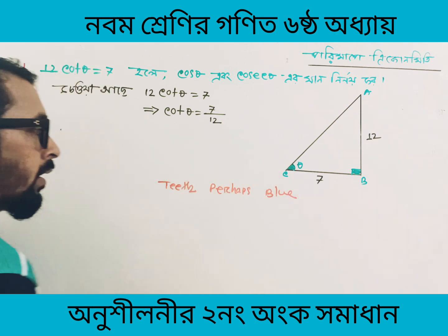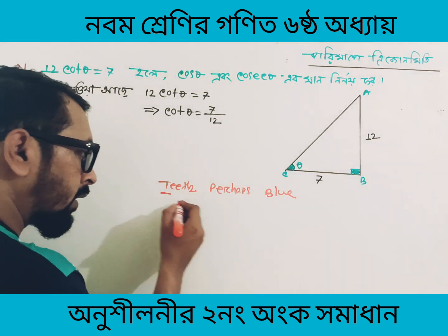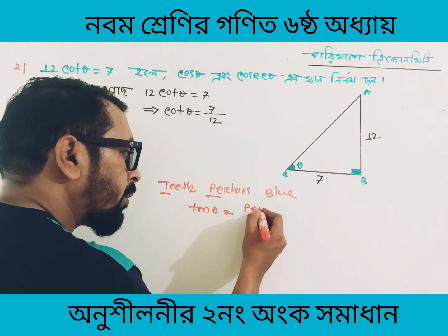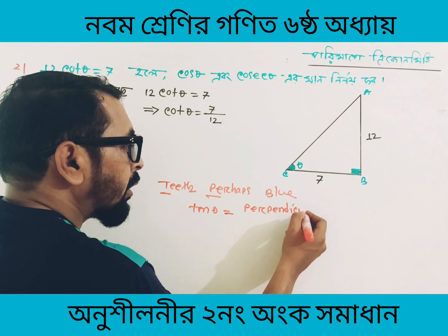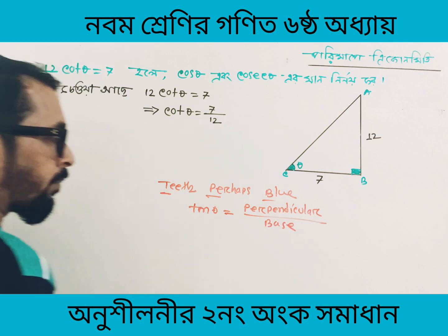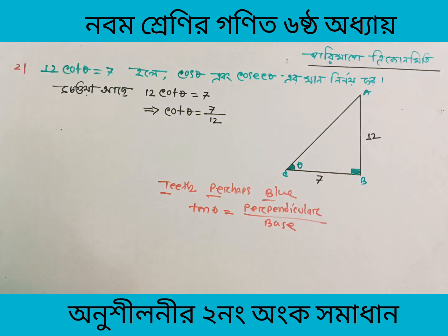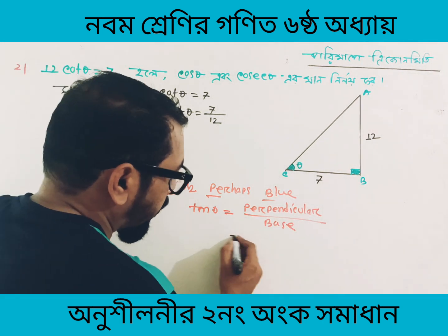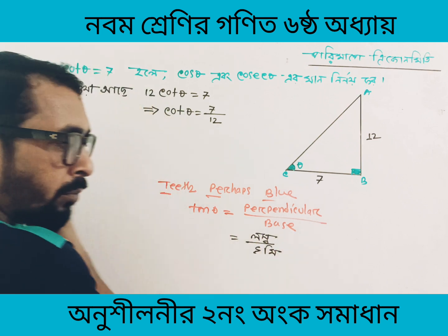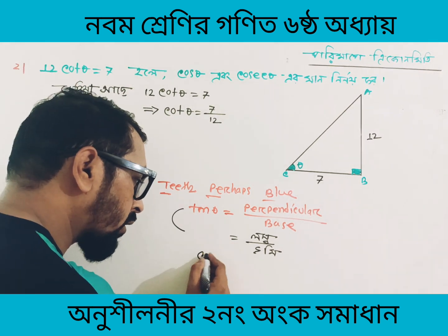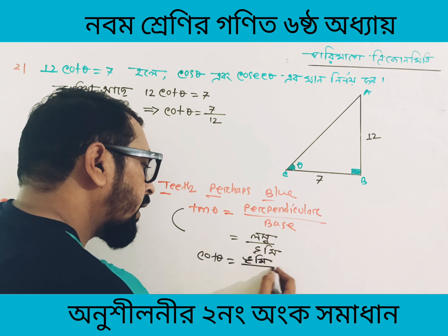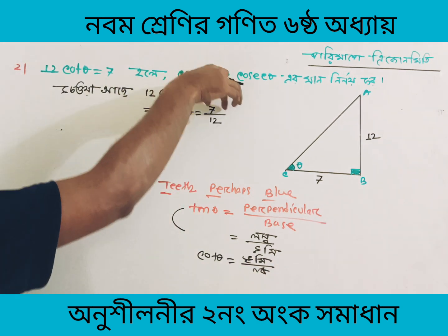We will call it tan theta. Teeth is tan theta. P is perpendicular — P-E-N-D-I-C-U-L-A-R — perpendicular, and B is base. If you write tan theta, perpendicular and B is Lombo, and then there is Bhoomi. Tan theta is Lombo divided by Bhoomi. What do we call cot theta? Cot theta is just the reciprocal: Bhoomi divided by Lombo. Cot theta is Bhoomi divided by Lombo.